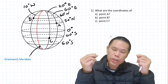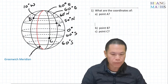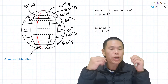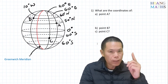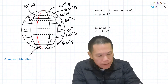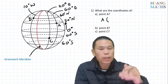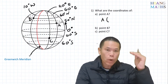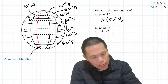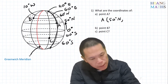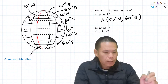First question: what are the coordinates of points A, B, and C? When we write coordinates we need to write latitude first, followed by longitude. So for point A, it is 50 degrees above the equator, so that means 50 degrees north. The longitude is 60 degrees east. So the coordinates are 50°N, 60°E.